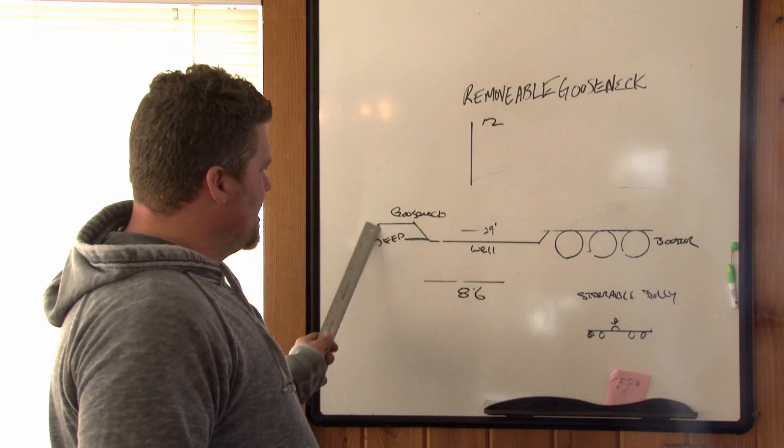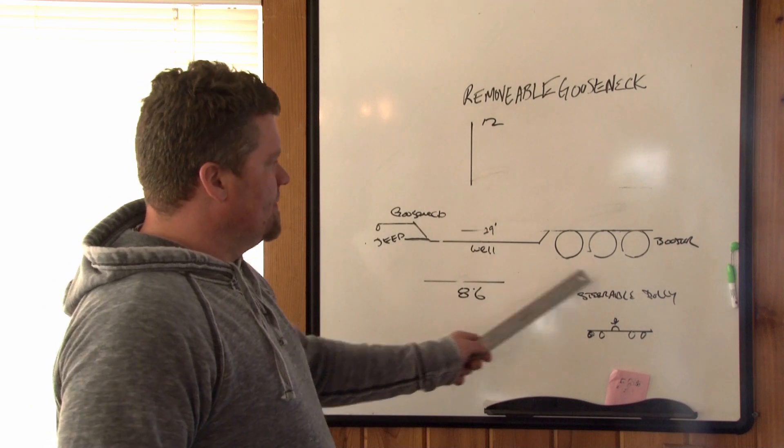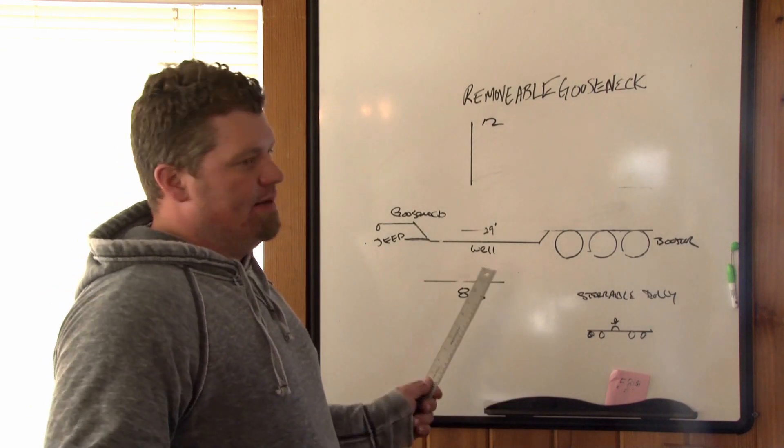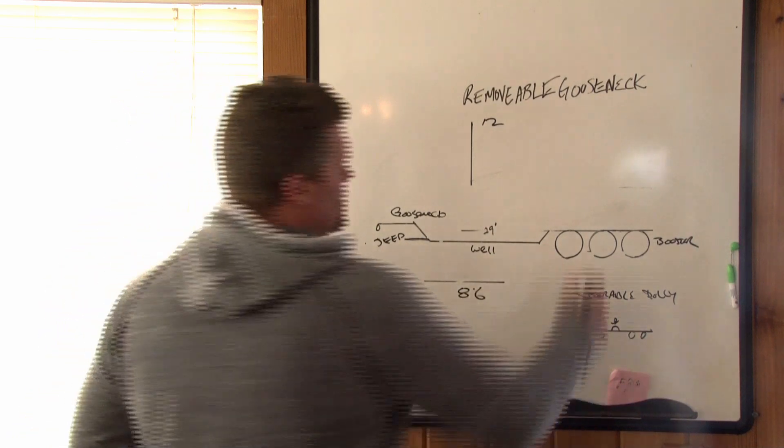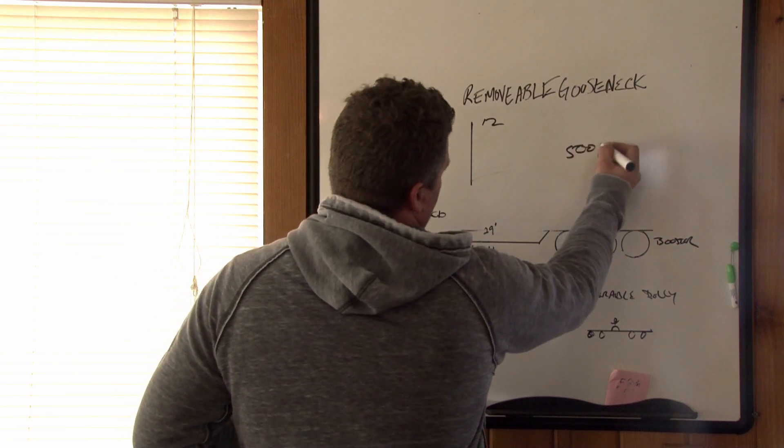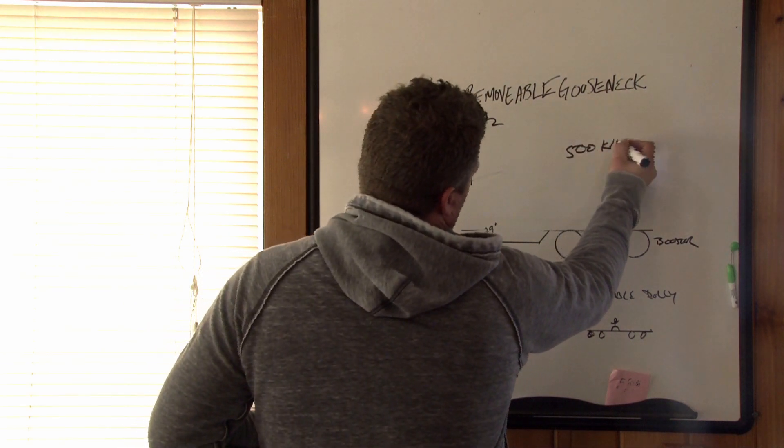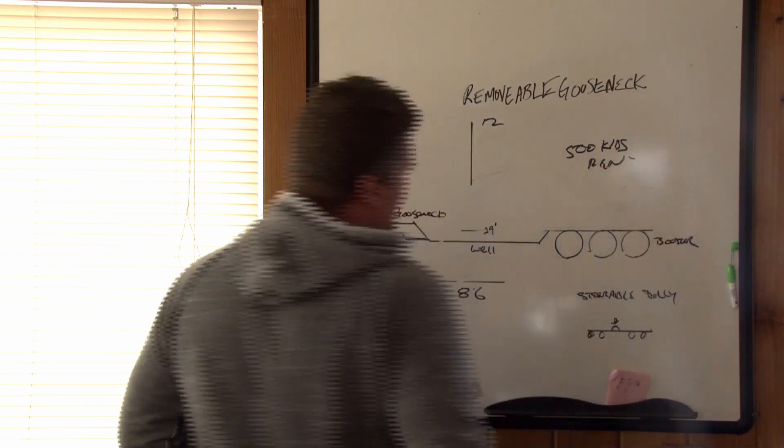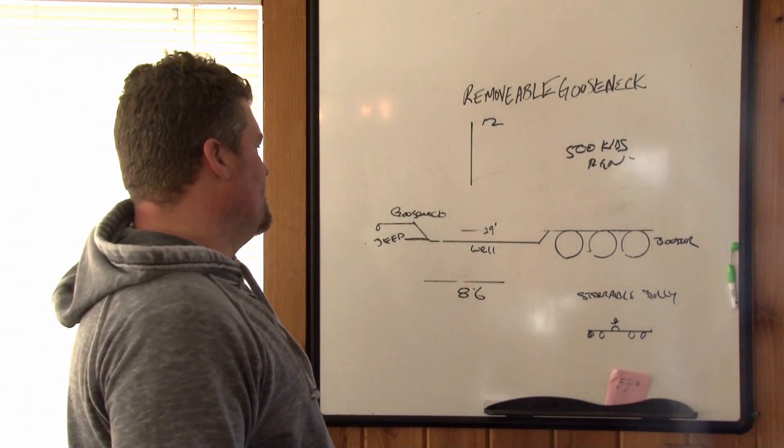Here's your gooseneck. If you need boosters in the back or a Jeep in the front, it's for extra weight. It's weight dispersion. You can haul up to, I'd say 500,000 pounds on an RGN, depending on what you have for your setup, for your heavy haul setup.